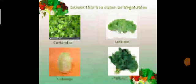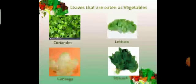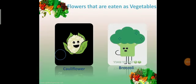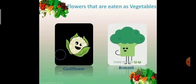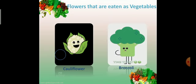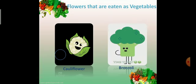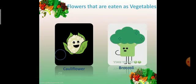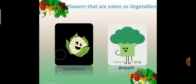Leaves that are eaten as vegetables. Coriander, lettuce, cabbage and spinach. These are leaves vegetables. Leaves vegetables means one type of leaves. And leaves vegetables are important for our health. So, we should eat leaves vegetables every day. Flowers that are eaten as vegetables. Are flowers just for smelling? No. We also eat certain flowers as vegetables like cauliflower and broccoli.